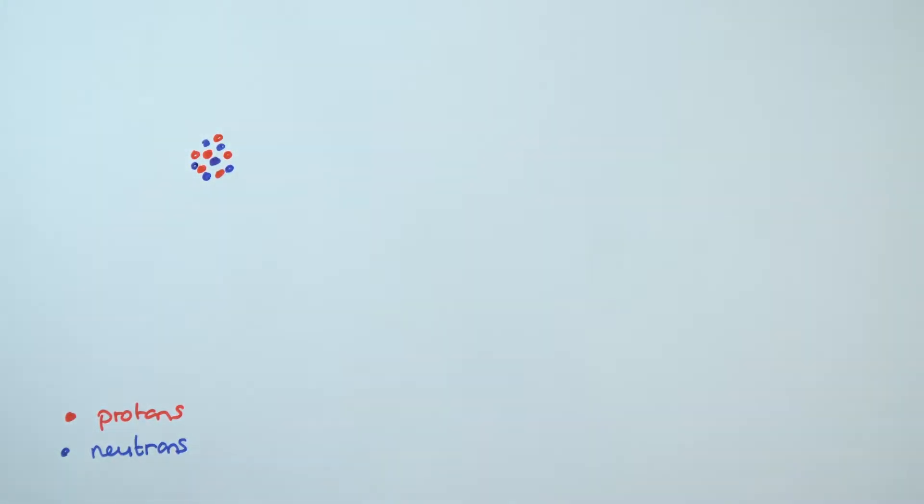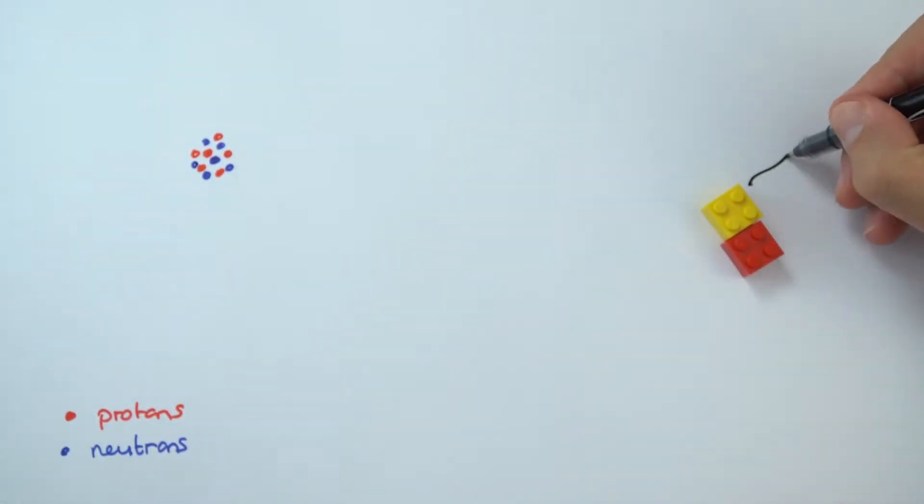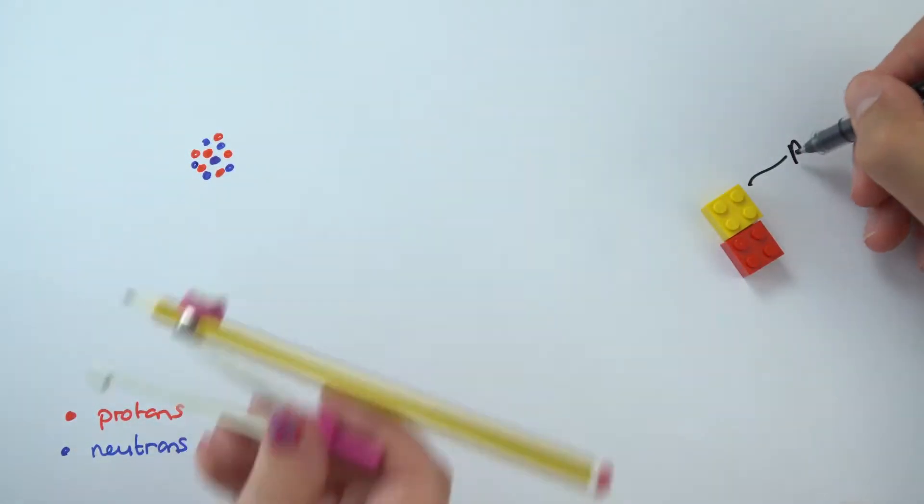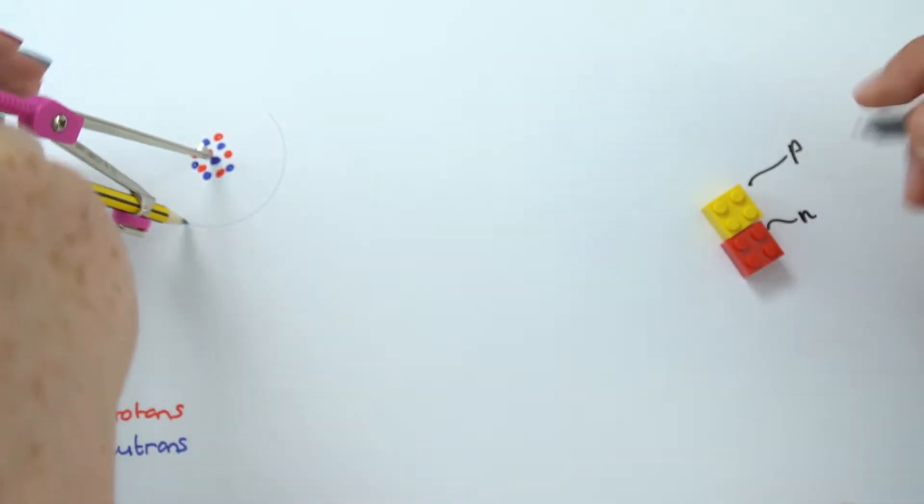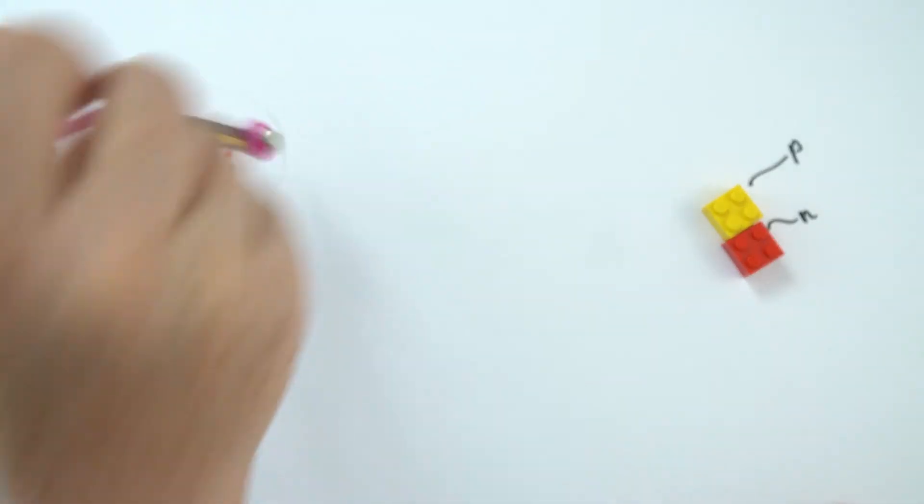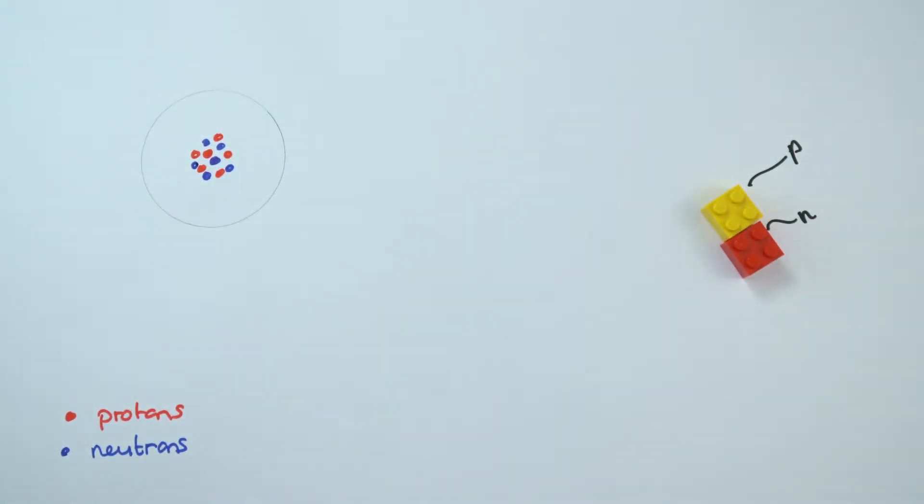Now the model that a lot of you might draw in your school labs is maybe just a load of circles. I'm going to be using, as I go into other videos, bits of Lego. And all I'm using is a yellow block of Lego to be a proton and I'm using a red block of Lego to be a neutron. So these are the two particles that we have inside the nucleus of an atom.